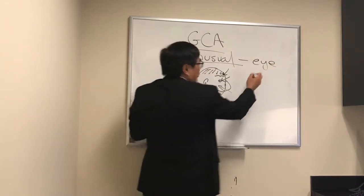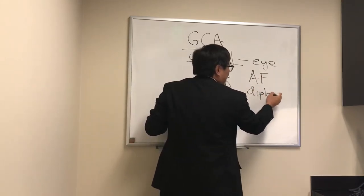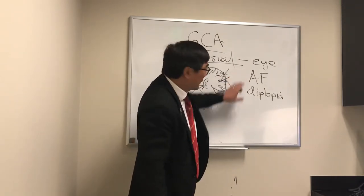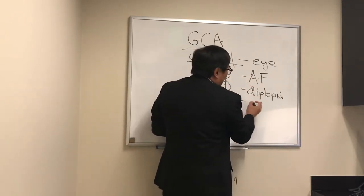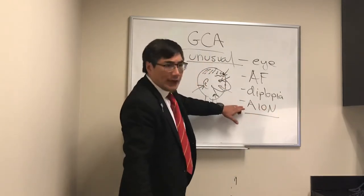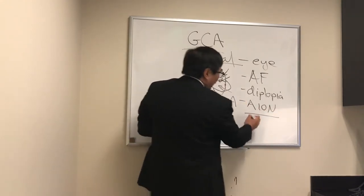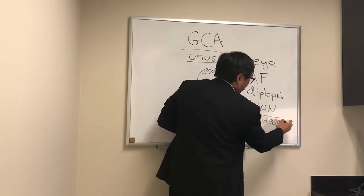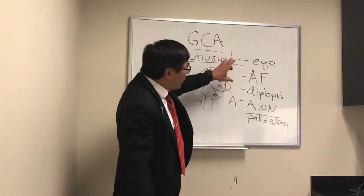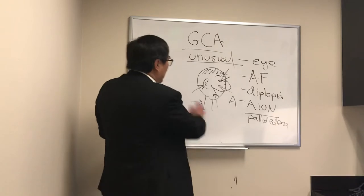The unusual eye manifestations of Giant Cell Arteritis include transient vision loss, amaurosis fugax, and transient diplopia — these are super dangerous because the eye exam is normal. Even though anterior ischemic optic neuropathy (AION) is the most common way a Giant Cell patient loses vision, with the disc being swollen and pale — which we call pallid edema — we should recognize there are also other unusual afferent presentations.